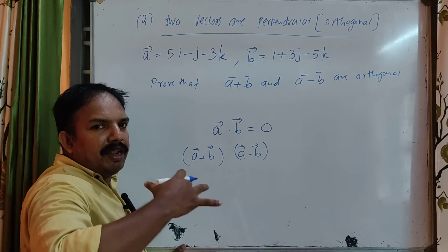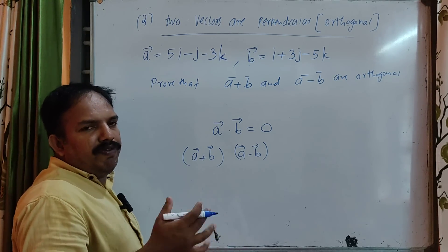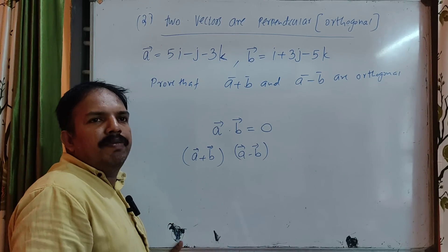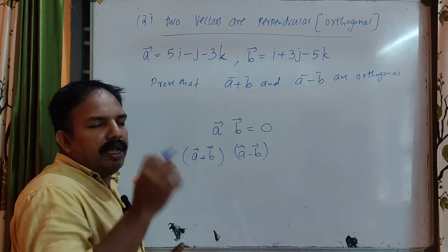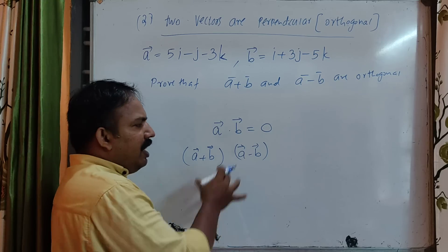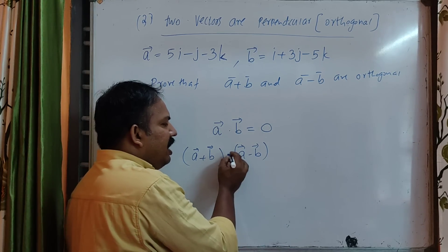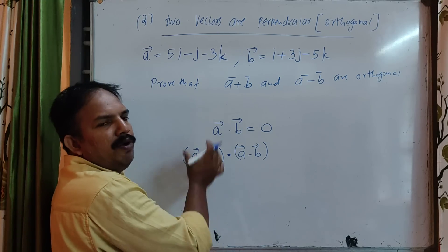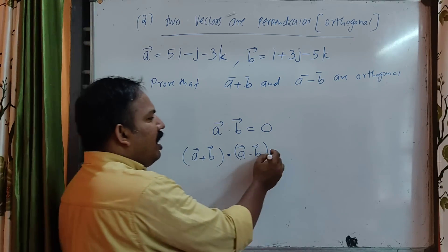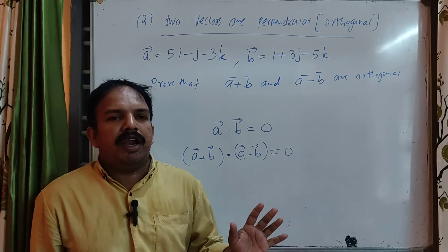We have to do a 7-mark problem in the scheme, and a 5-mark in the scheme as well. A plus b and a minus b — we have to prove it. I have to do a plus b and a minus b. This is the value — this is a very important question.